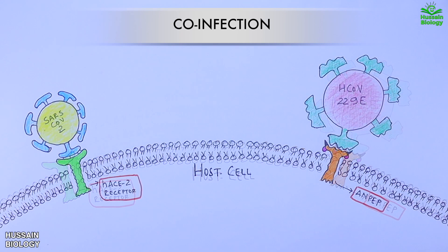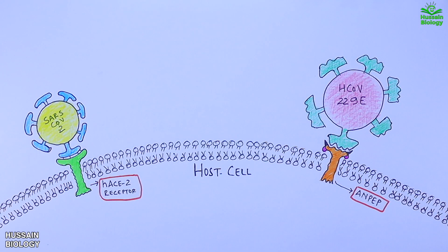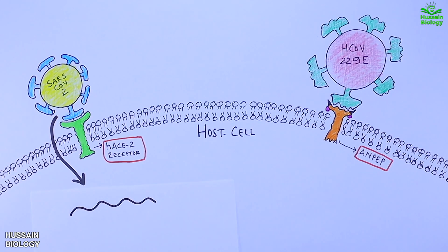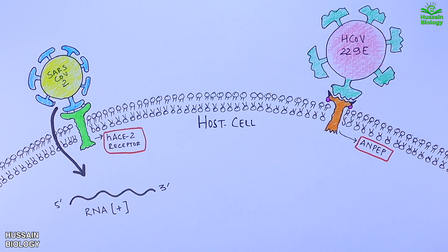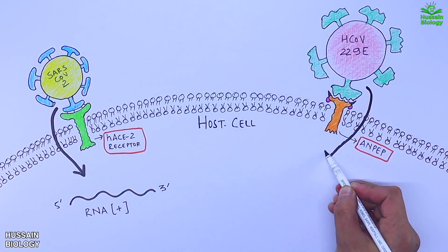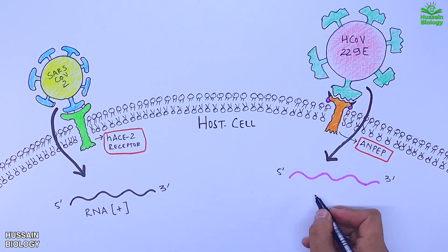Then we know there is membrane fusion of these viruses and ultimately their genome is sent into the host cell. Like we see the SARS-CoV-2 sends its positive RNA genome into the host cell, whereas 229E virus sends its own positive RNA genome into the host cell.